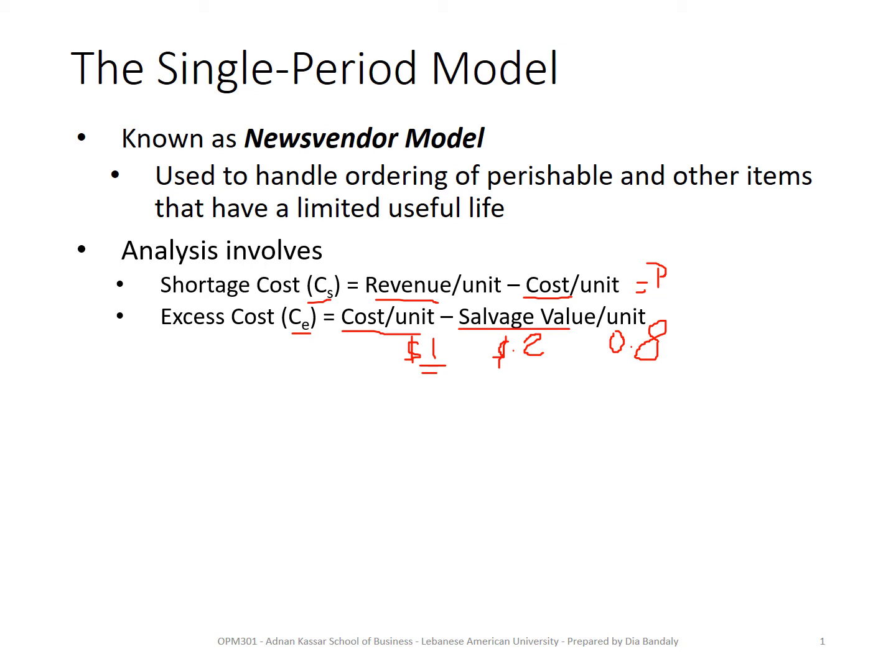For example, if you're buying tomatoes and at the end of the selling season you have some remaining, you can sell them to a company that may take them, and this will be your salvage value. In some cases you have a salvage; in other cases you don't. Based on this, you make your calculation of what your actual excess cost CE is.